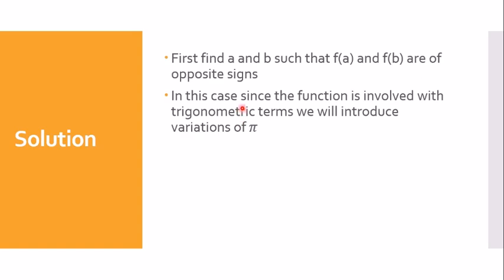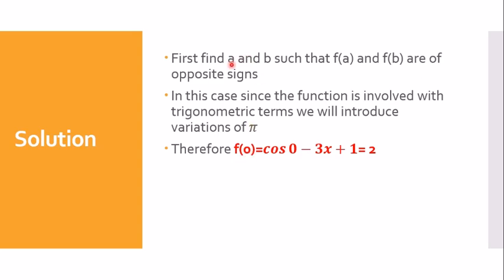There is a slight variation from the previous problem. Since we are dealing with trigonometric terms, we will introduce different variations of π. So we find f(0): substituting 0 for a, we get cos 0 - 3(0) + 1, which equals 1 + 0 + 1 = 2. This is a positive value.